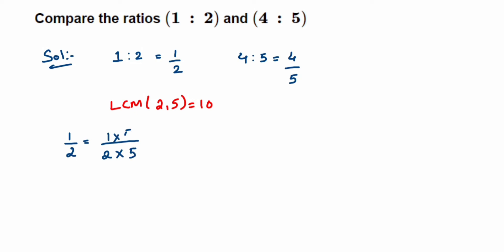So 5 upon 10 is an equivalent fraction of 1 upon 2. Similarly, 4 upon 5. With 5, what should we multiply to get 10 in the denominator? It is 2. So multiply 2 in the numerator and denominator, so it will be 8 upon 10.